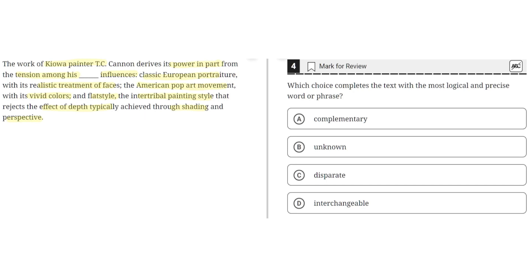So, choice A says complementary. This is incorrect because complementary implies that the different influences work together or help each other out. But it clearly shows that there is tension among these different influences. So A is incorrect.